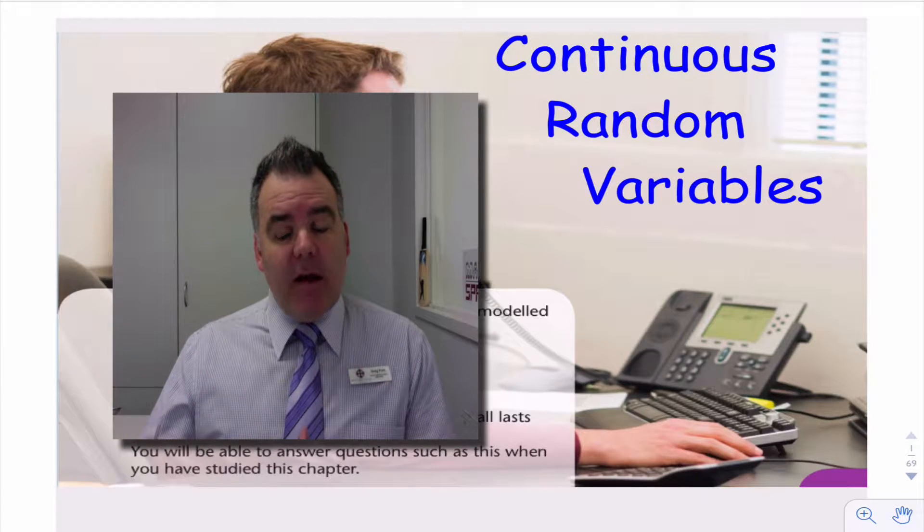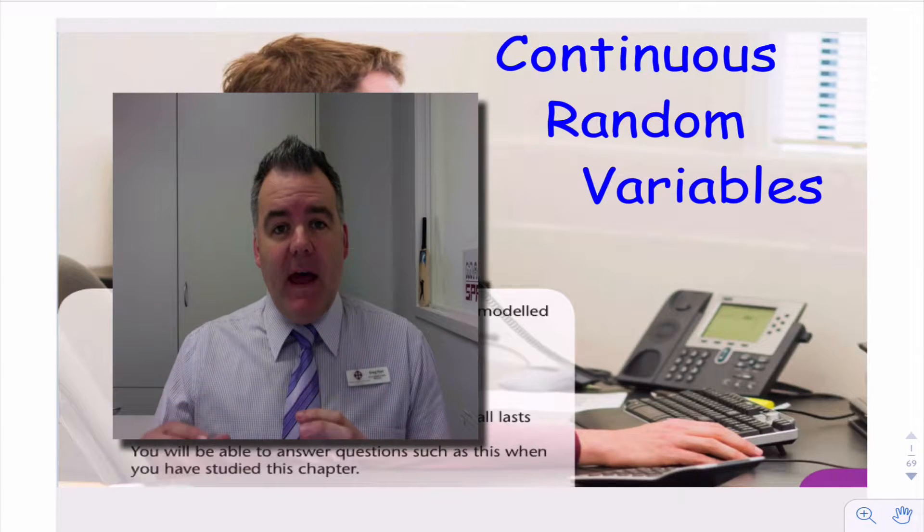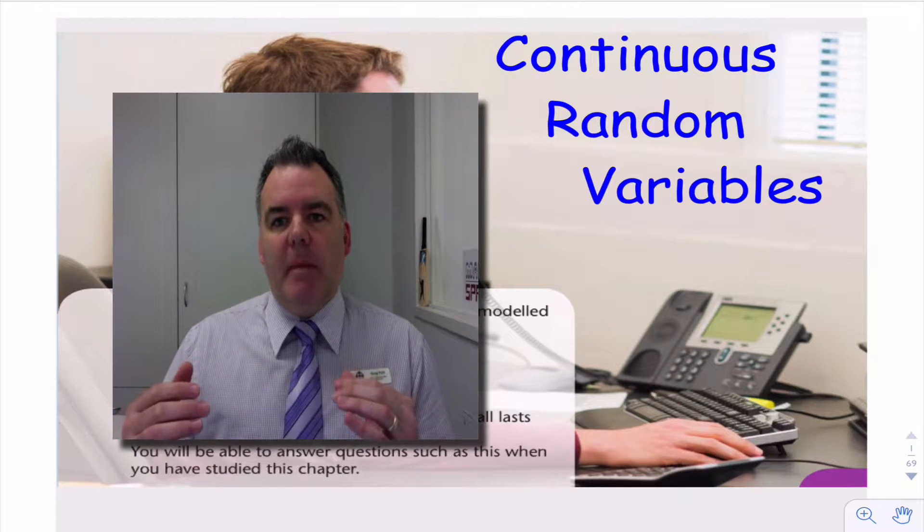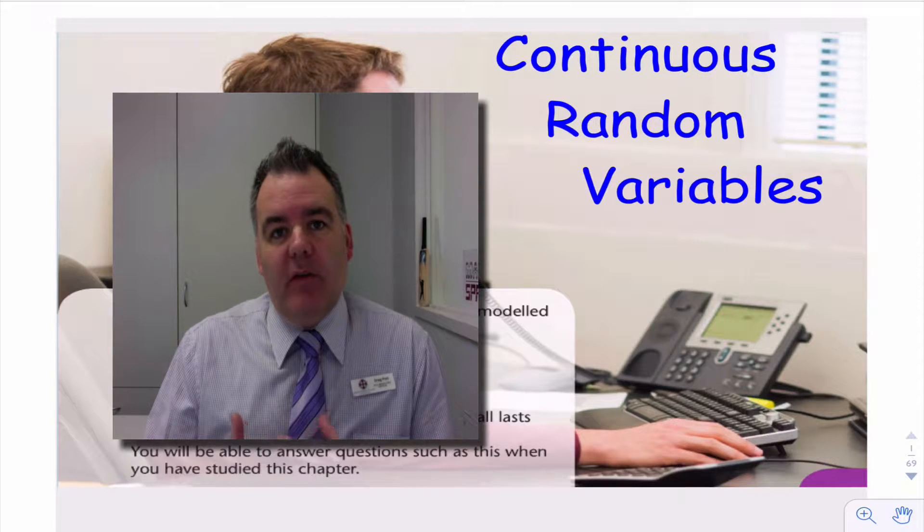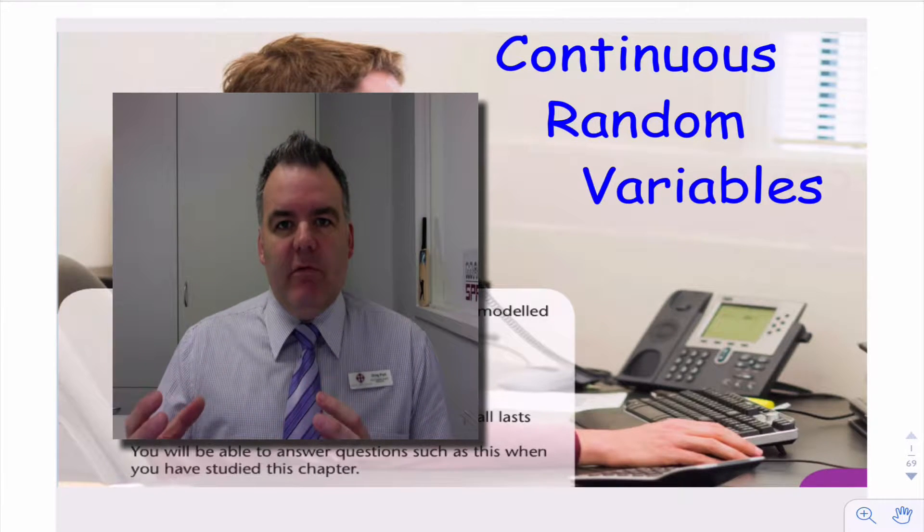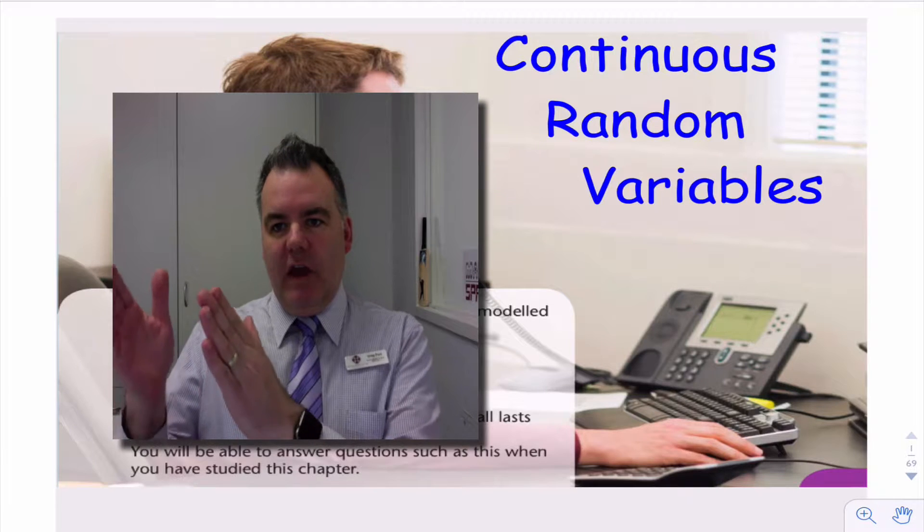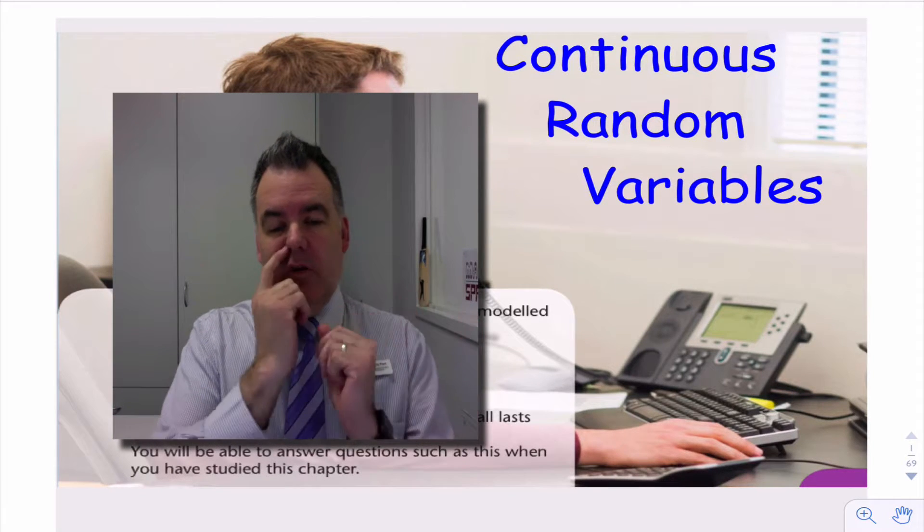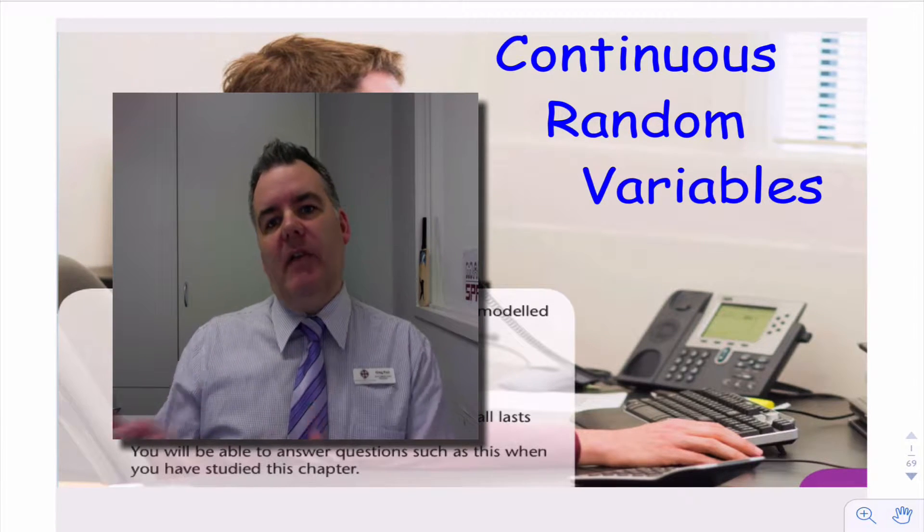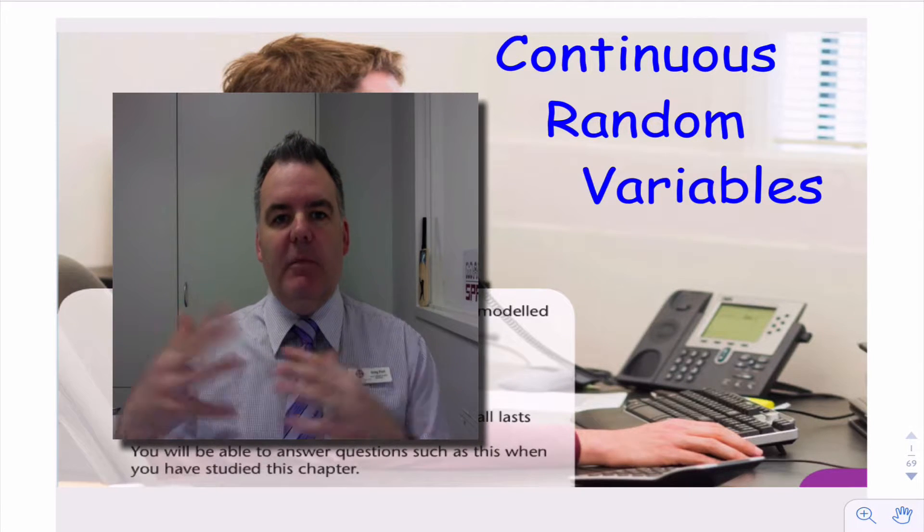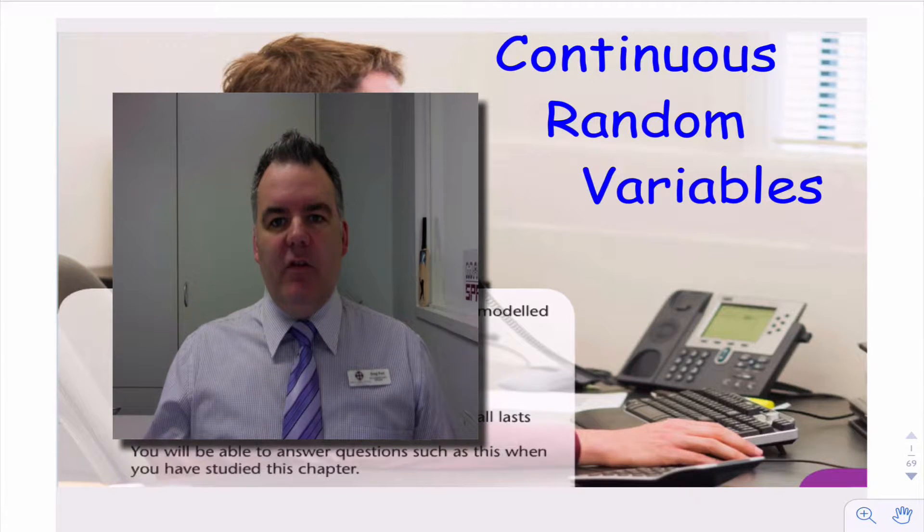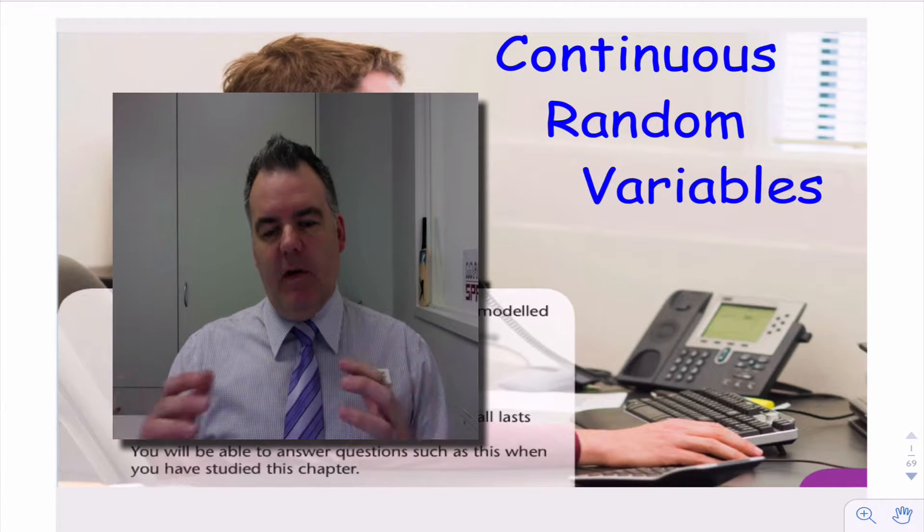We've studied discrete random variables and we know a little bit about what they are. A random variable, remember, is just a variable that changes depending on the outcome of an experiment. So discrete random variables are random variables that only take on particular values. So the number of cars passing a certain point in the day would be a discrete random variable. The number of people in a room at a certain time would be a discrete random variable.